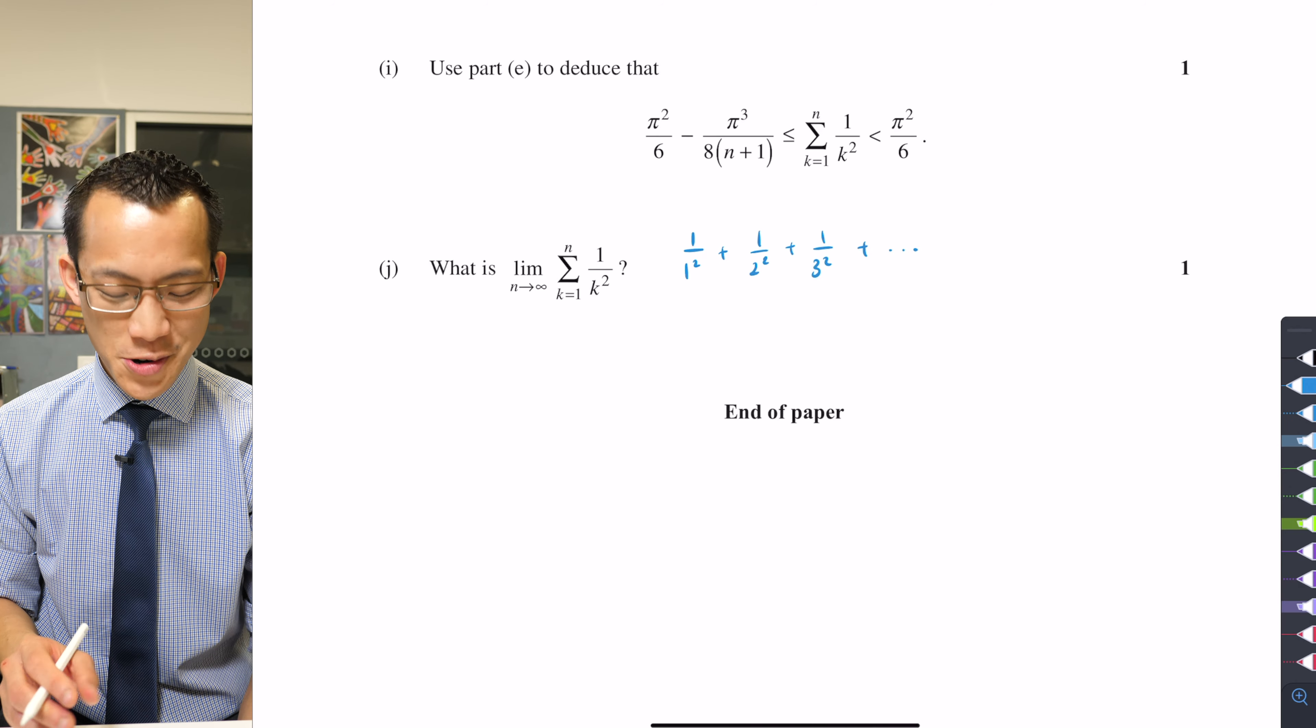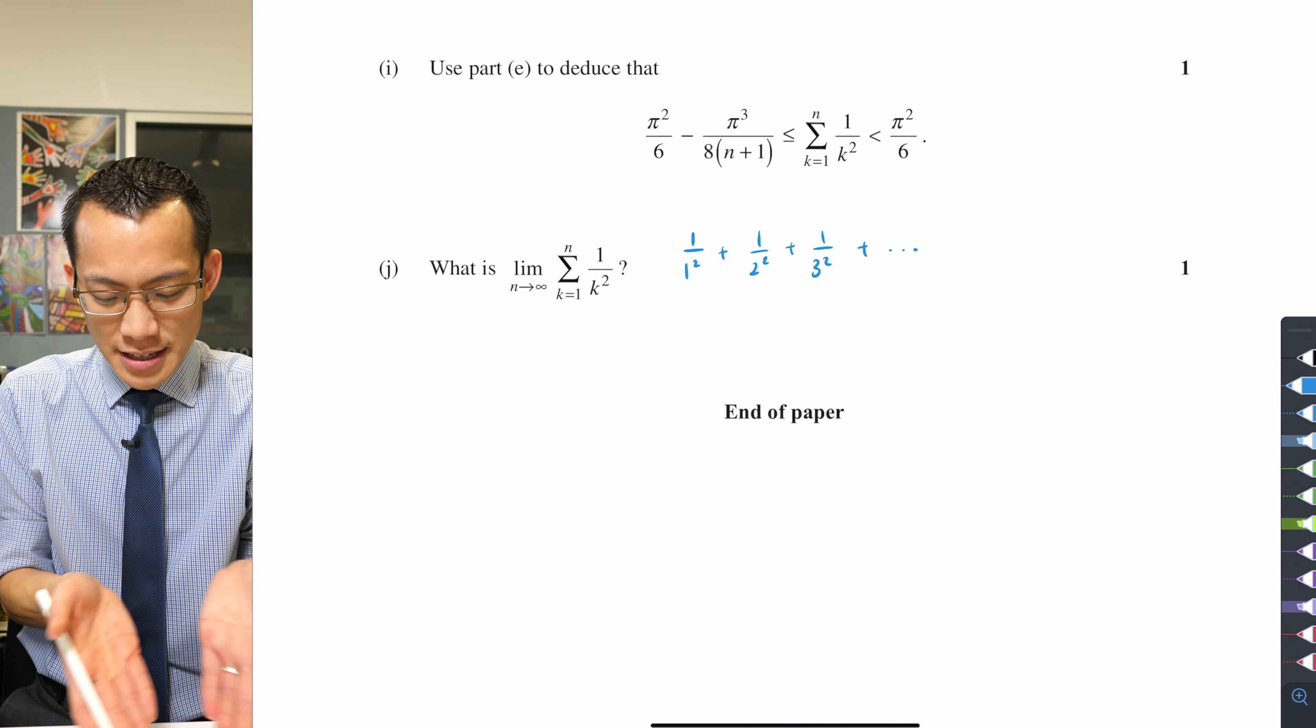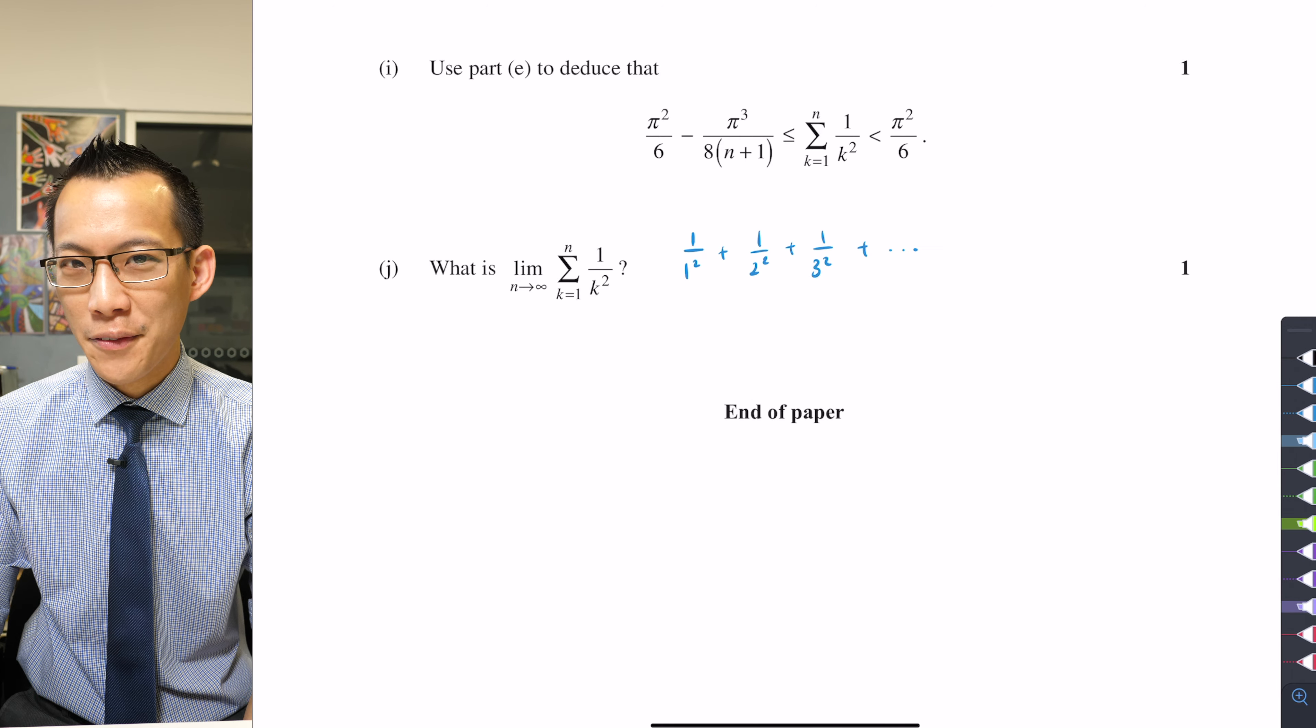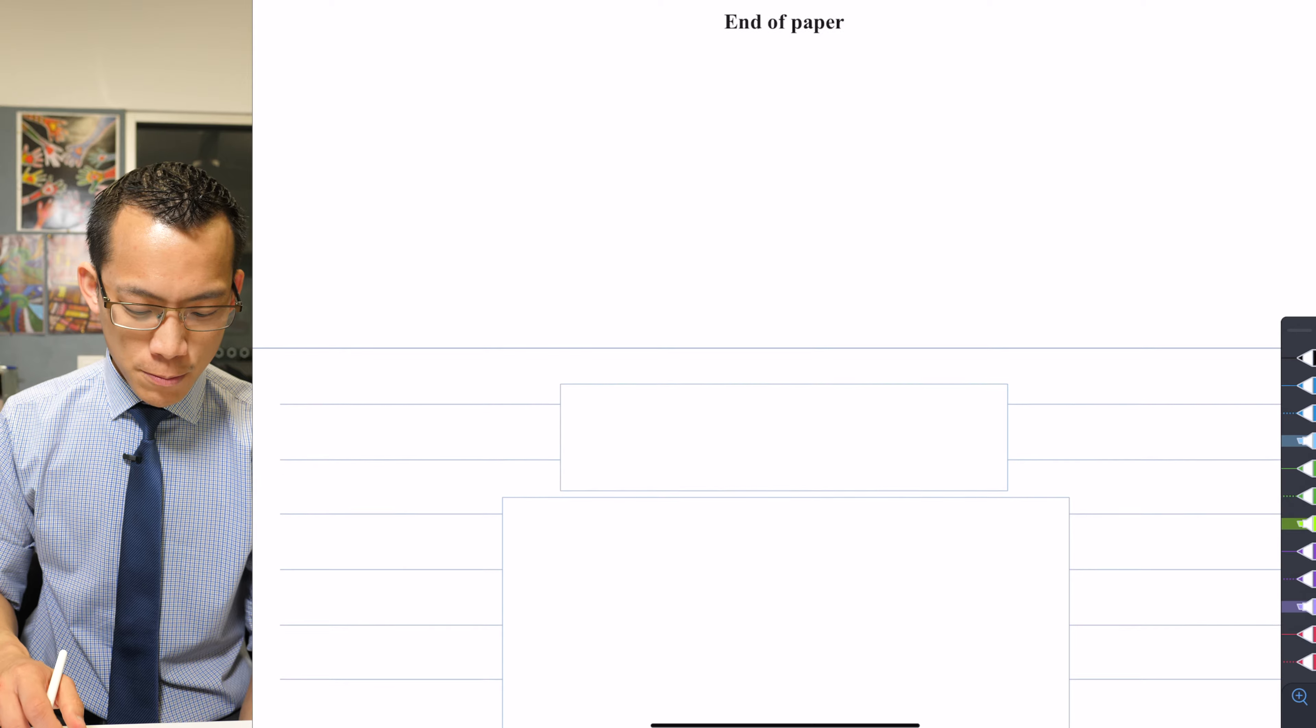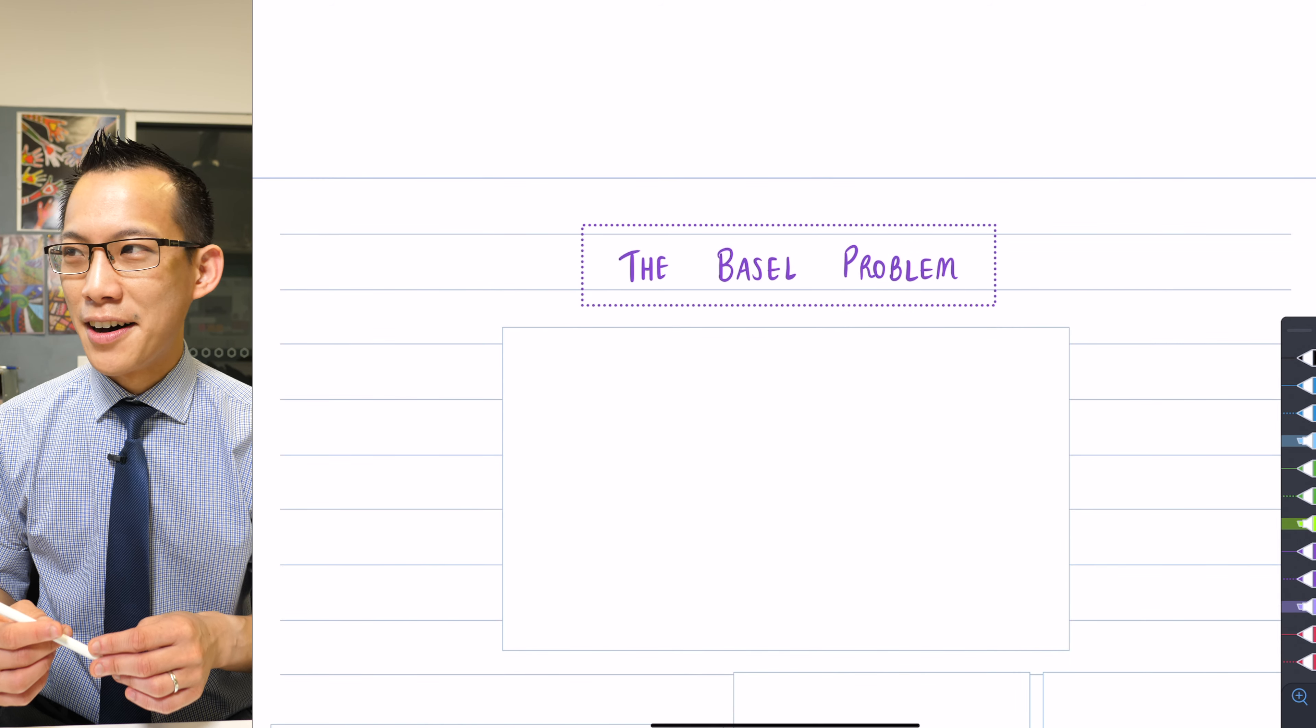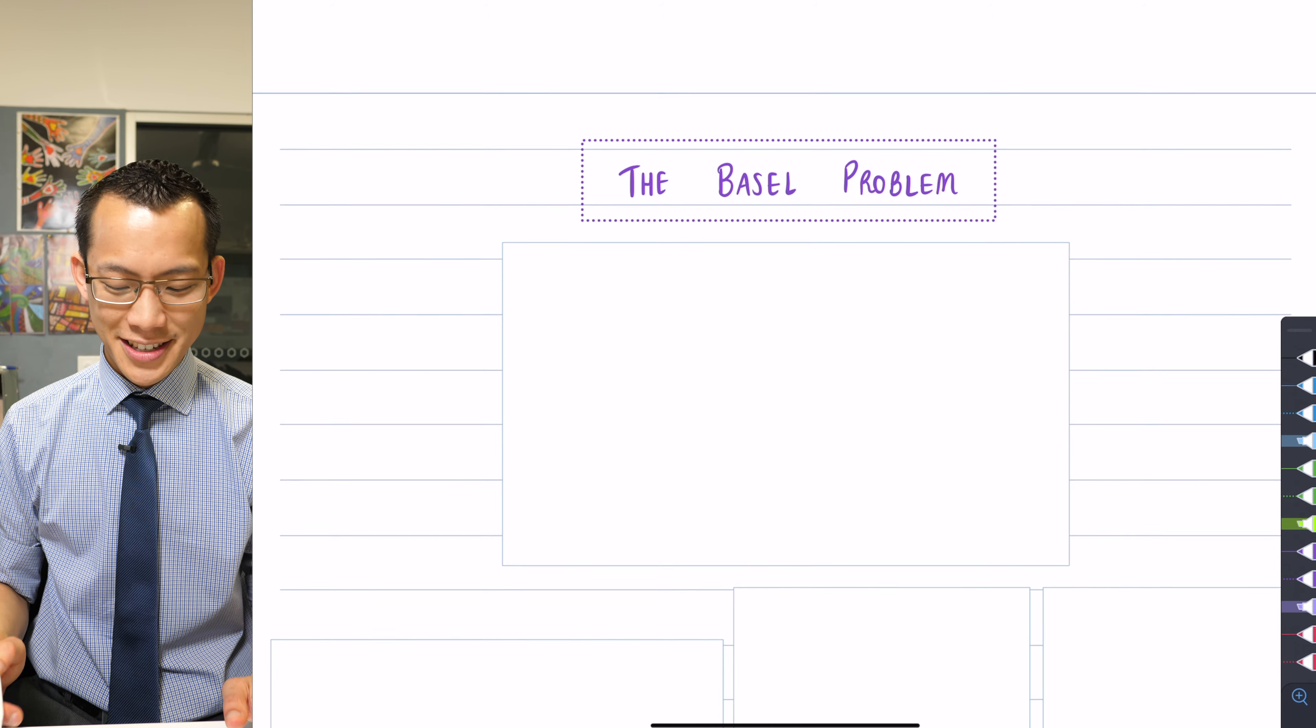You know, when things are important and famous, we name them. This problem is called the Basel Problem, and it's named Basel not after like the herb or a person. It's named Basel after a town in Switzerland where this problem was first posed.